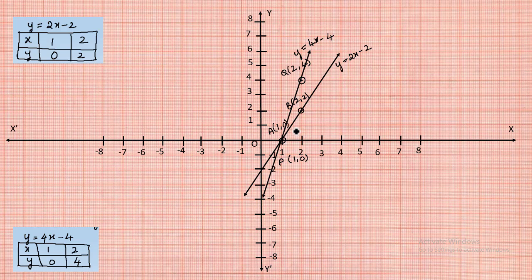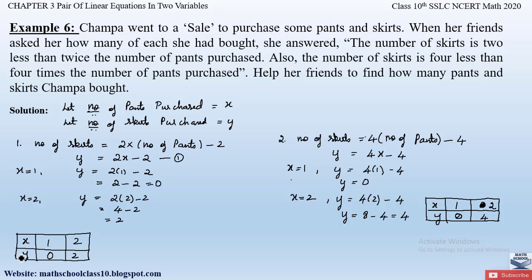We observe that these two lines intersect at a common point, that is (1, 0). This point forms the unique solution for both equations y = 2x − 2 and y = 4x − 4. Therefore, the two lines intersect at point (1, 0).